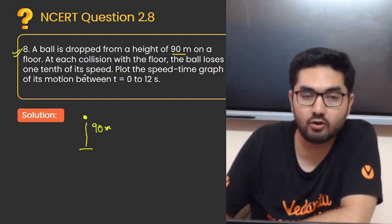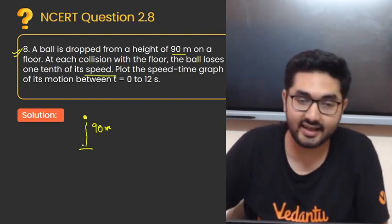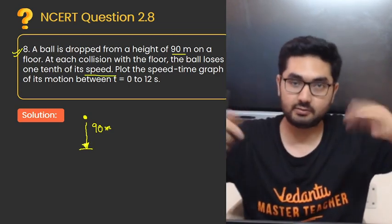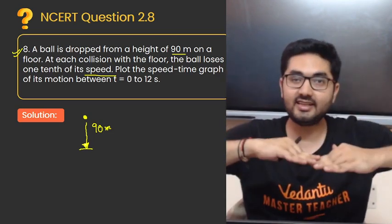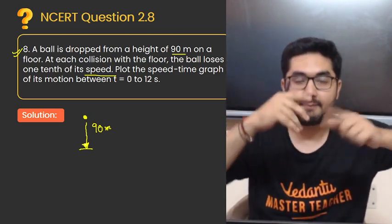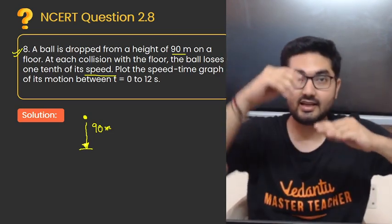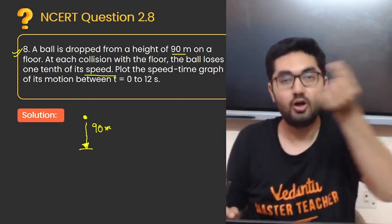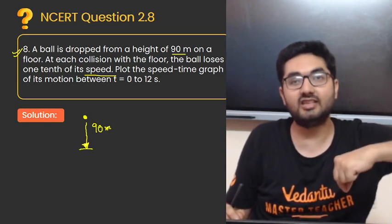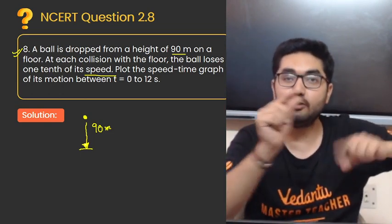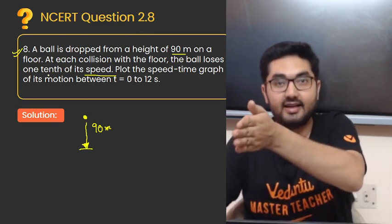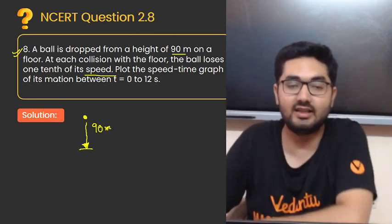At each collision with the floor, the ball loses one tenth of its speed. Jab ye touch karti hai ground mein, at every collision it is losing one tenth of its speed. Matlab basically ball upar se neeche giri, woh vaapis upar jayegi. Ab kehane ka matlab hai, jab vaapis upar jayegi, jis velocity se woh upar jayegi aur jis velocity se usne ground ko touch kiya, uski ten percent decrease hai.